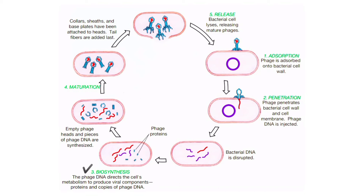The phage DNA is transcribed to mRNA using the host cell's machinery. This mRNA is translated on the host ribosomes and directs the synthesis of capsid proteins and viral enzymes. Some of these enzymes are DNA polymerases that replicate the phage DNA. Thus, phage infection directs the host cells to make only viral products.